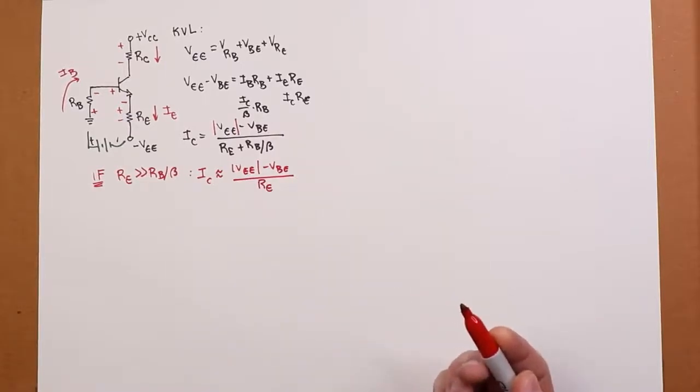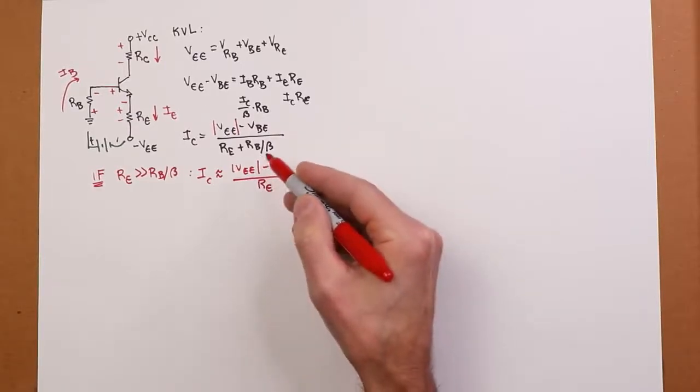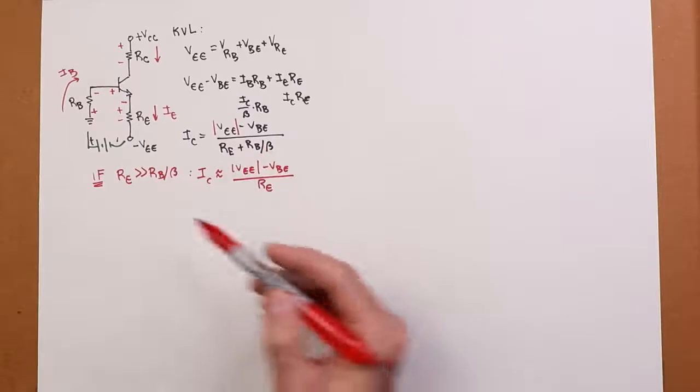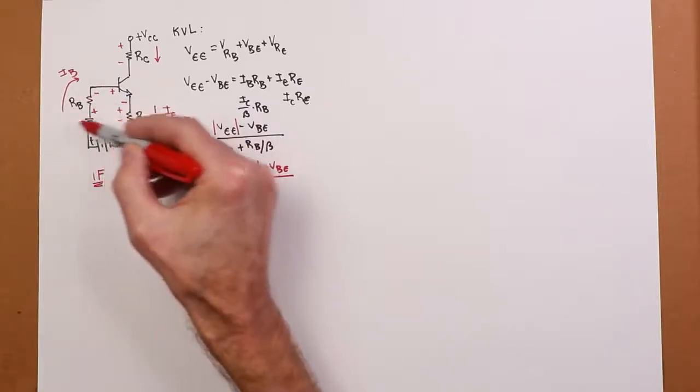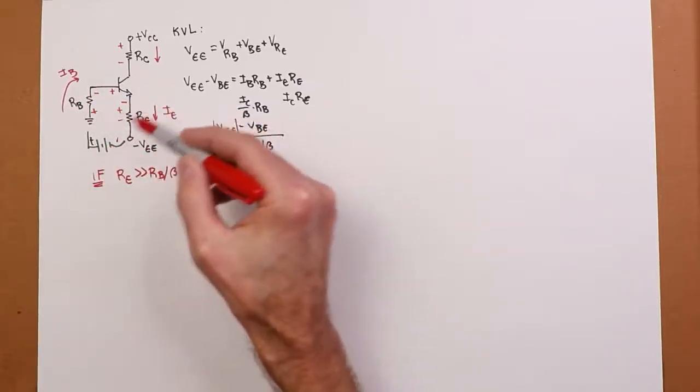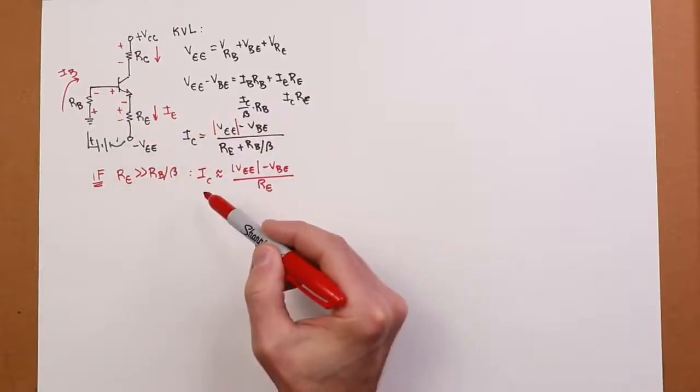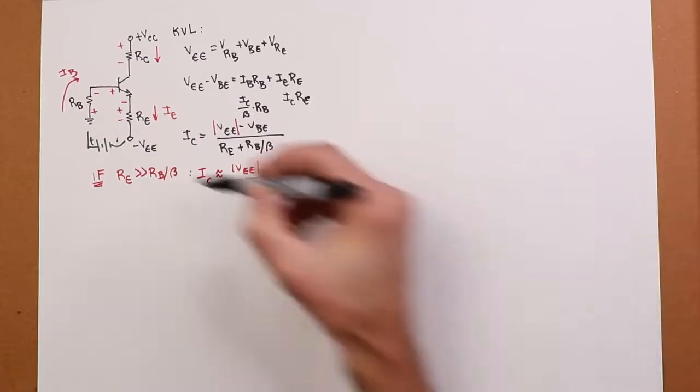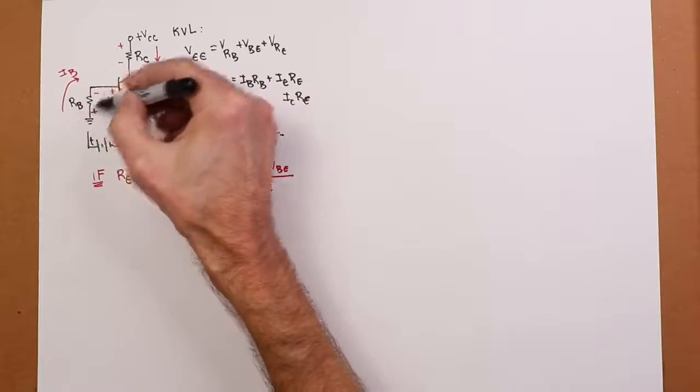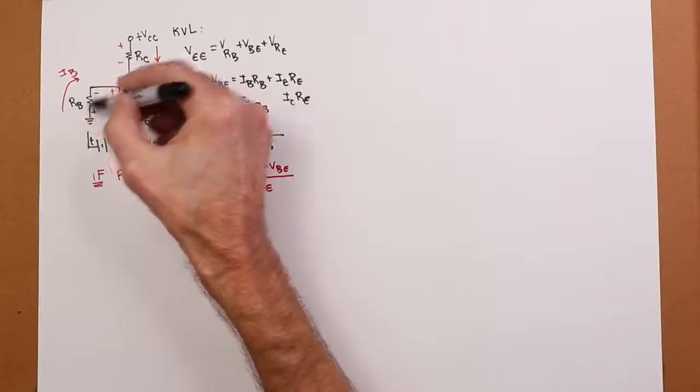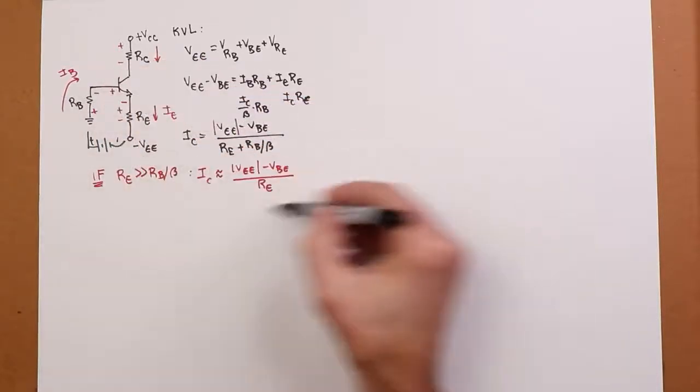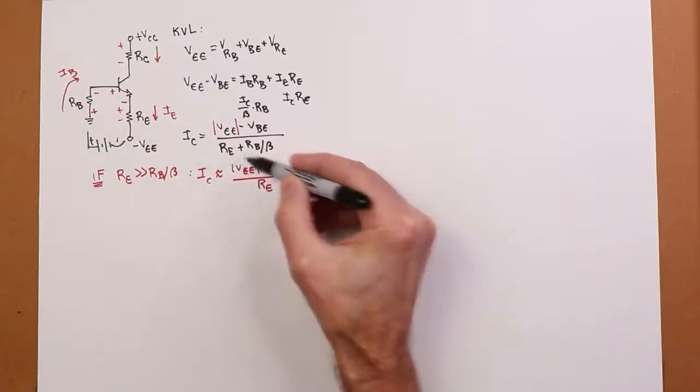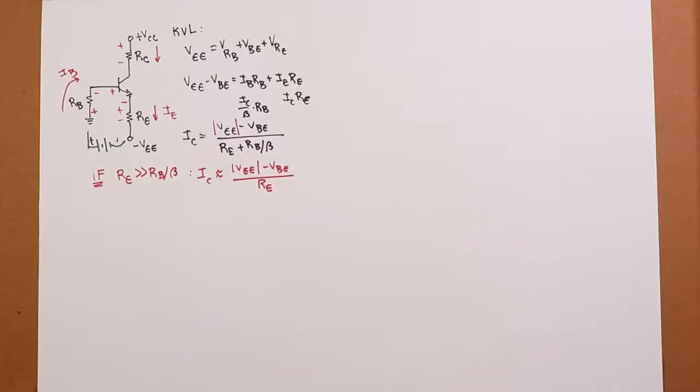Now, the important thing to notice about this is if RE is a lot bigger than RB over beta, then beta doesn't make a difference. In other words, IC is approximately equal to VEE minus the VBE 0.7 divided by RE. Now, given typical values of beta, you're talking 100, 150, 200, 250, something like that for small signal transistors. What that really means practically is as long as the base resistor is around the same size or smaller than RE, this will be true, and you will wind up with very high stability. So if this was a 10K and this was a 15K or a 4.7K or something like that, you could just use this approximation and everything would be good. Otherwise, you can just throw in your RB over beta term over there.